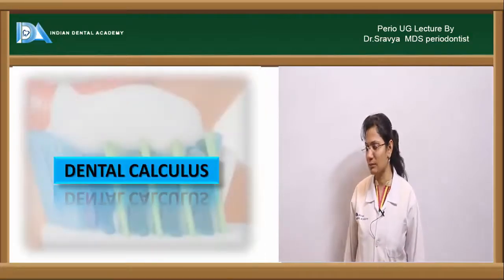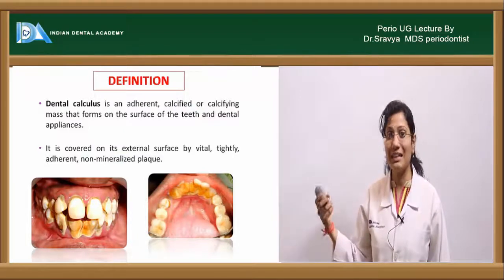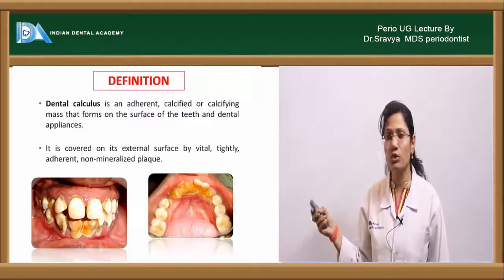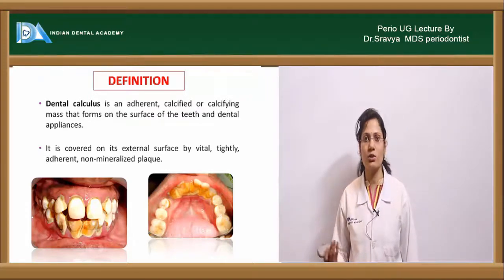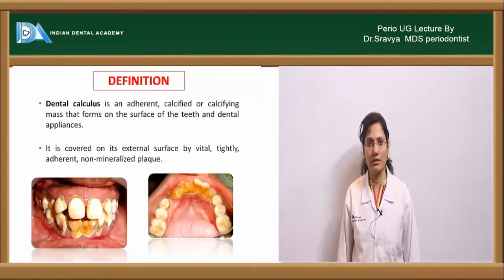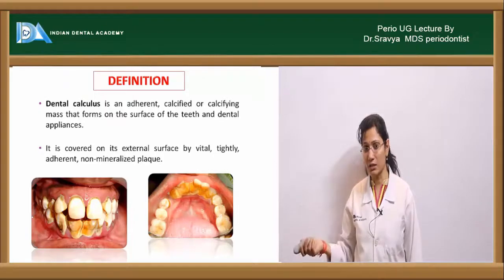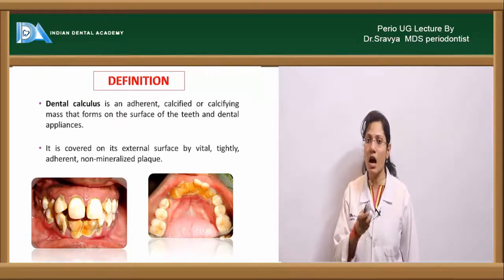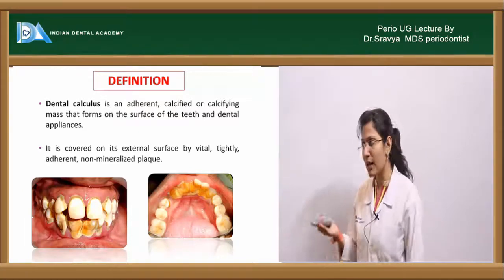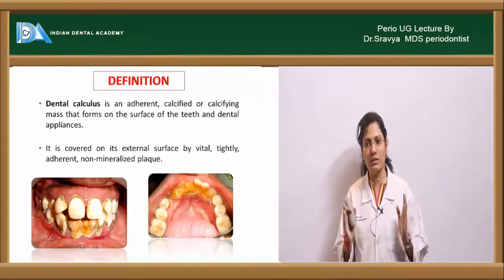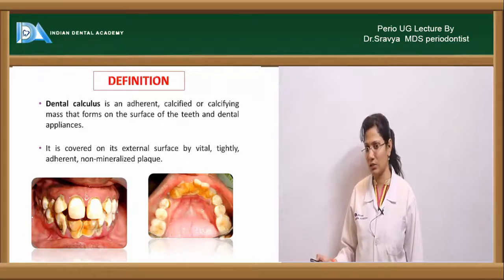By definition, dental calculus is an adherent calcified or calcifying mass that forms on the surface of the teeth and dental appliances. Your dental calculus is always covered on the external surface by a vital, tightly adherent, unmineralized plaque. So dental calculus is just a mineralized form of plaque, and the external surface of that calculus is always covered by a layer of unmineralized plaque.